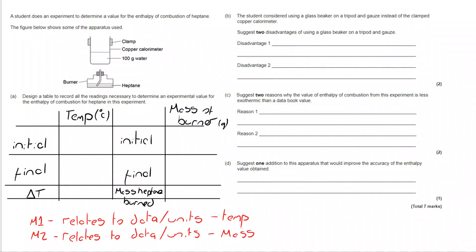Let's move on to part B. The student considered using a glass beaker on a tripod and gauze instead of the clamped copper calorimeter. What two advantages might there be about using a glass beaker on a tripod and gauze?